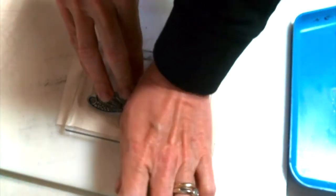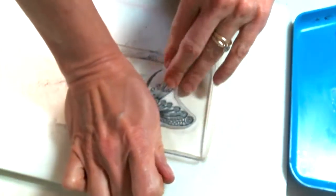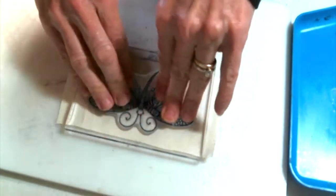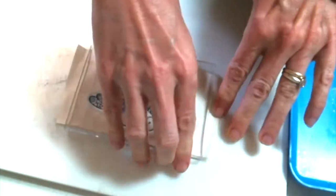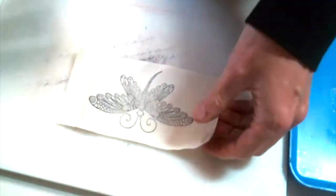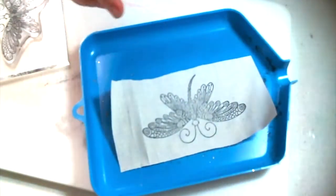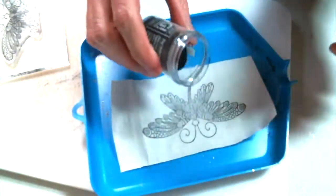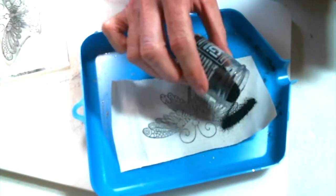Now I'm just going to put it right in the middle and press it down all over real good because you want to get it all in the fabric. Then I'm just going to lift it—it's gorgeous—put it in my tray, and hurry up and sprinkle on my glitter black embossing powder.